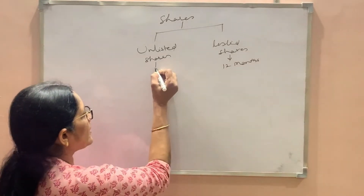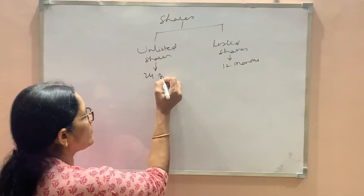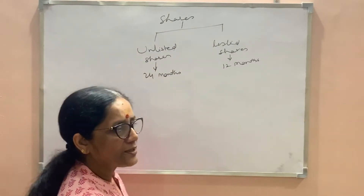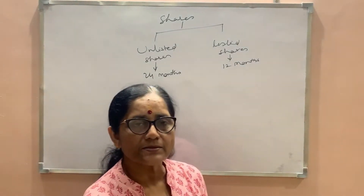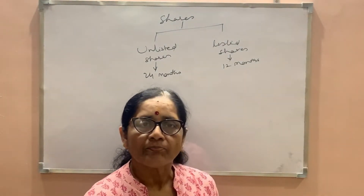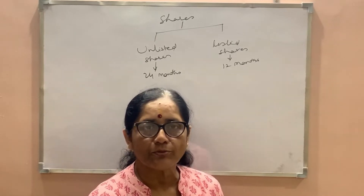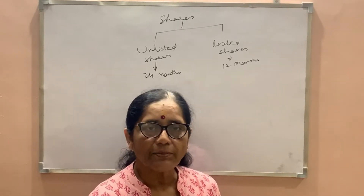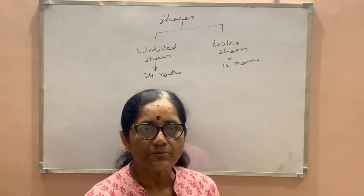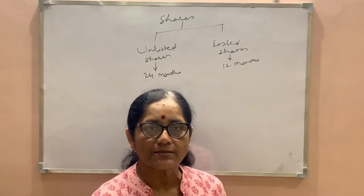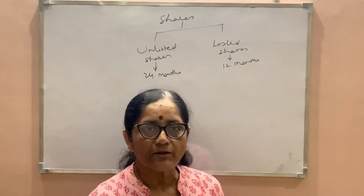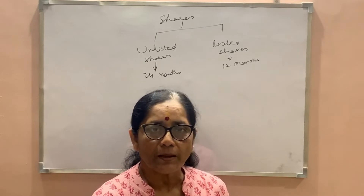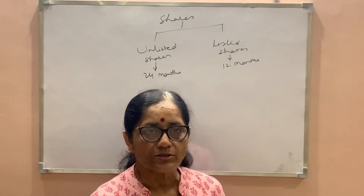Then we have unlisted shares. Here we have 24 months — if the assessee keeps these shares for a period of more than 24 months and sells, we have long-term capital gain or loss, but if the assessee keeps them for less than 24 months, we have short-term capital gain or loss.